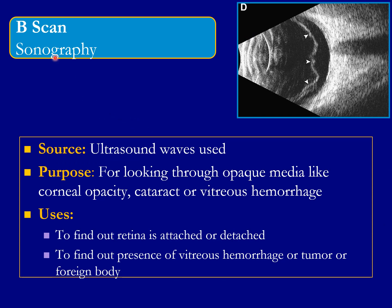In the B-scan or sonography, the source of the investigation is ultrasound waves. The purpose is for looking through opaque media like corneal opacity, cataract, or vitreous hemorrhage. The uses are to find out whether the retina is attached or detached — as seen in this picture where the retina is detached. We can also find out the presence of vitreous hemorrhage, a tumor, or a foreign body.